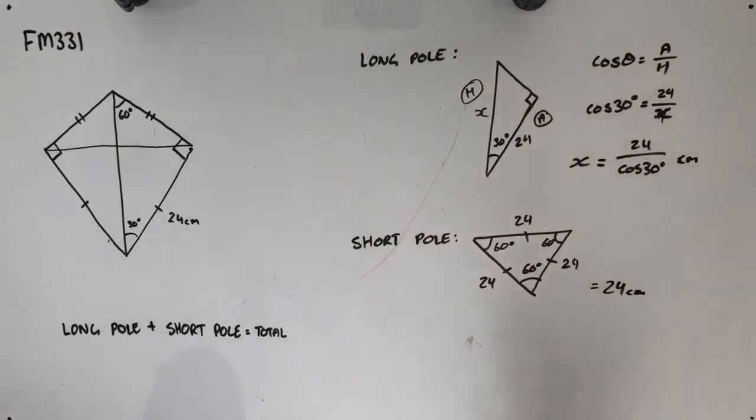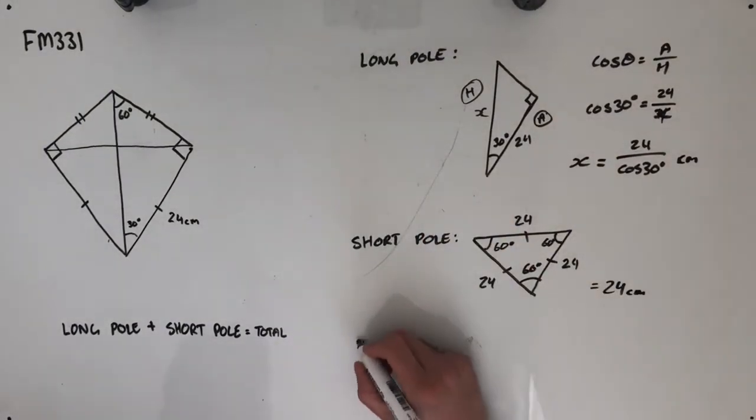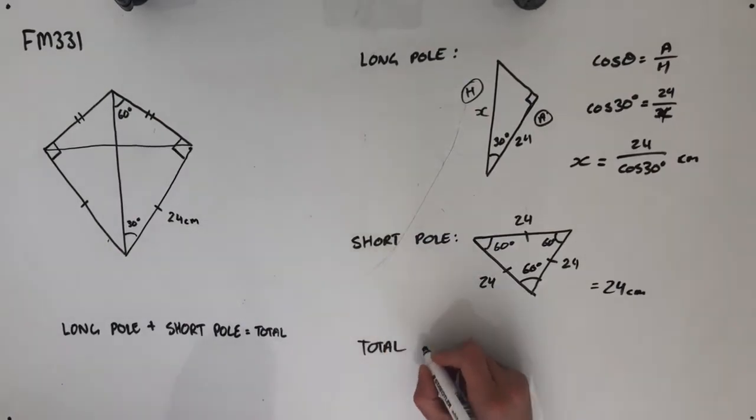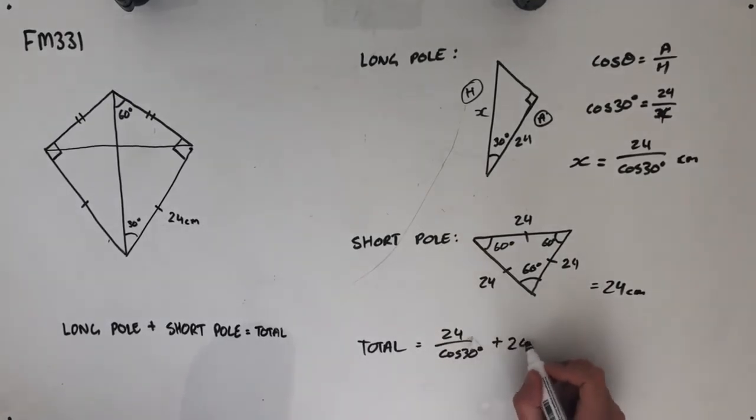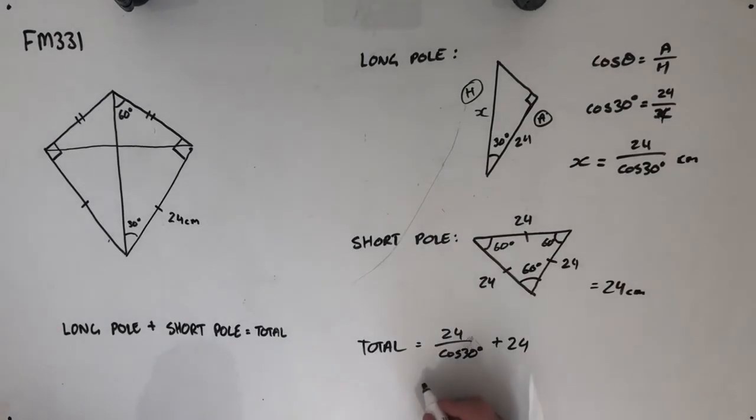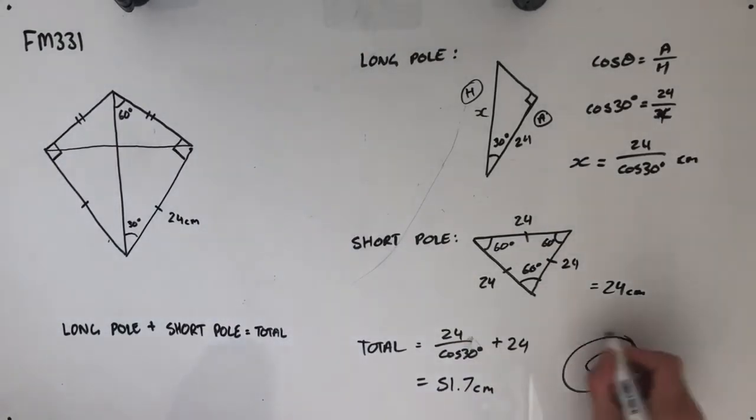So our total is going to be equal to 24 over cos 30 degrees plus 24. Plugging all of that into a calculator and rounding to the first decimal place should give you an answer of 51.7 centimeters, which of course is option C.